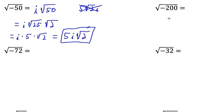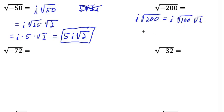Here's a similar problem: square root of negative 200. Since it's a negative square root, right off the bat I'm going to rewrite that as i times the square root of 200. Now, is there a perfect square root that divides into 200? There is — 100 divides into 200. So this is equal to i times the square root of 100 times the square root of 2. The square root of 100 equals 10, so this is i times 10 times the square root of 2. We rewrite it as 10i times the square root of 2.